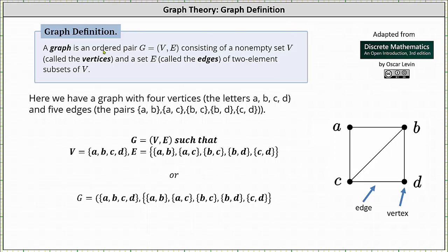A graph G is an ordered pair V comma E consisting of a non-empty set V, called the vertices, and a set E of two element subsets of V, called the edges.